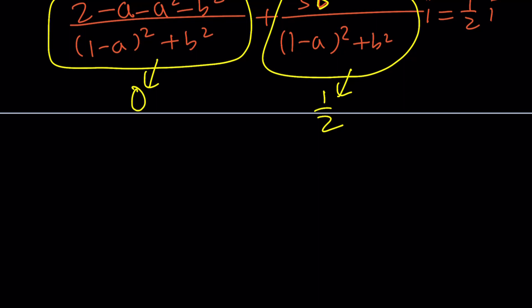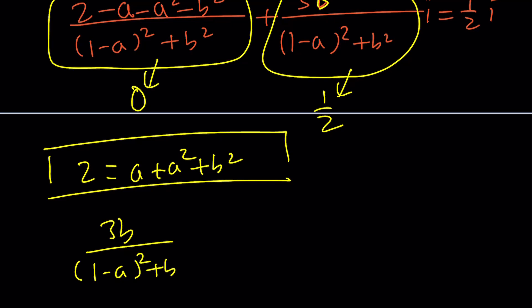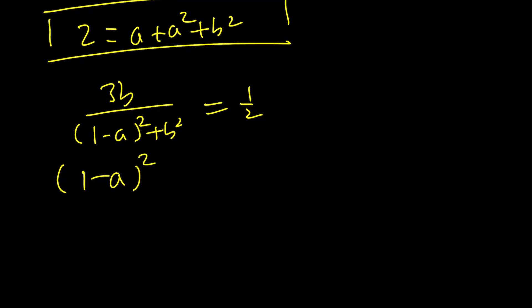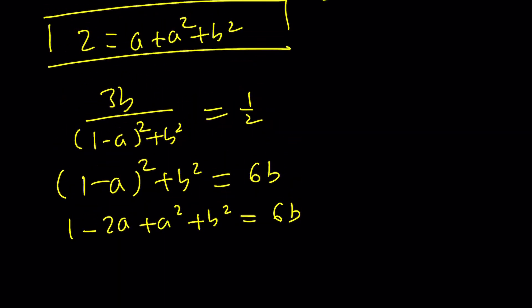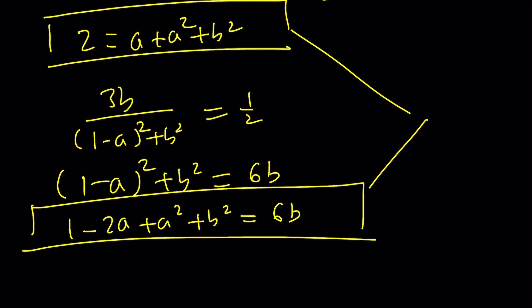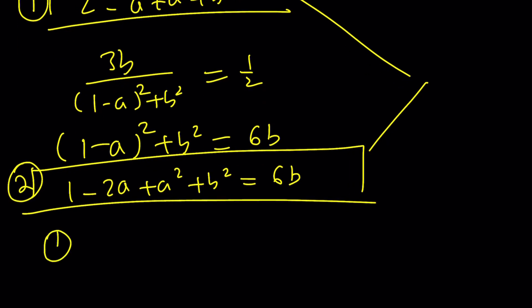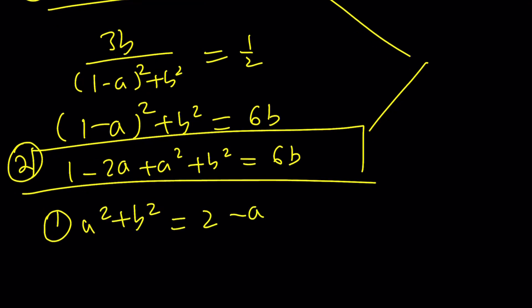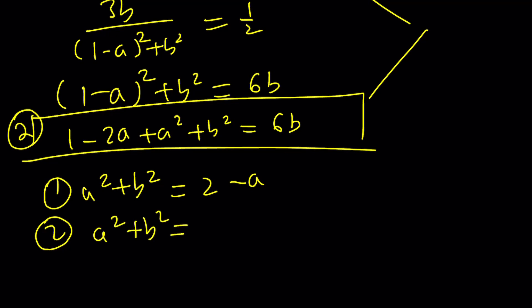So from the fraction being equal to 0, we basically get 2 equals A plus A squared plus B squared. That's one of the equations. And the second one is a little more work. 3B divided by 1 minus A squared plus B squared equals 1 half. Let's cross multiply. 1 minus A squared plus B squared equals 6B. I want to expand this. 1 minus 2A plus A squared plus B squared equals 6B. And then from both of these equations, since I have two equations and both of them contain A squared plus B squared, I want to extract it and set it equal to each other. From the first equation, A squared plus B squared is equal to 2 minus A. And from the second equation, A squared plus B squared is equal to 6B plus 2A minus 1. So when two things are equal to the same thing, then they are equal.